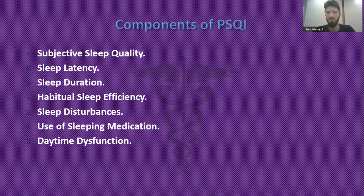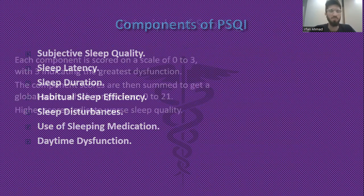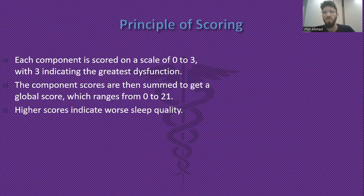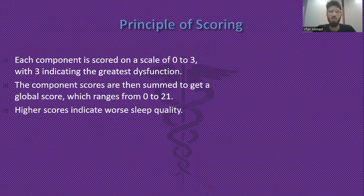The seven components are: subjective sleep quality, sleep latency, sleep duration, habitual sleep efficiency, sleep disturbance, use of sleep medication, and daytime dysfunction. Each component is scored on a scale of zero to three, with three indicating the greatest dysfunction. The component scores are then summed to produce a global score ranging from zero to 21, where higher scores indicate worse sleep quality.